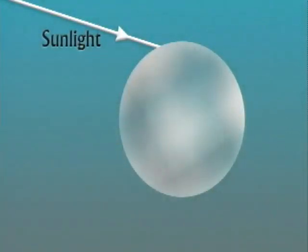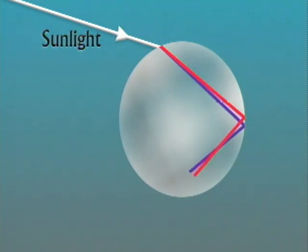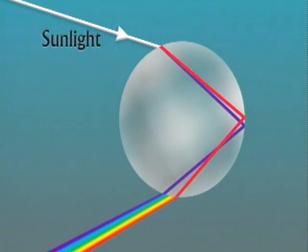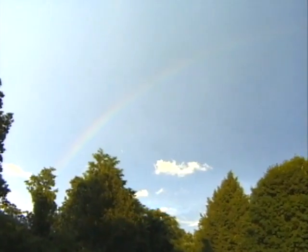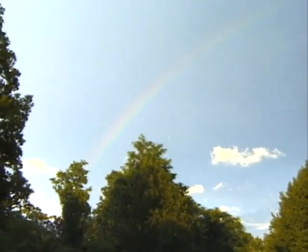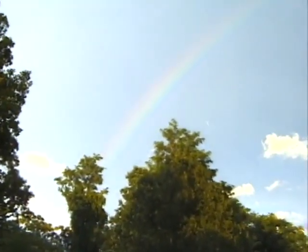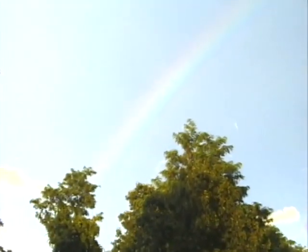To make an entire rainbow, light from the sun enters many different raindrops. This light is refracted as it enters the drops, then reflected off the back of the raindrops, then refracted again as it leaves the raindrops and becomes part of the rainbow that we see in the sky. How much of a U-turn each photon makes as it's refracted by the raindrop depends on the energy of the photon.